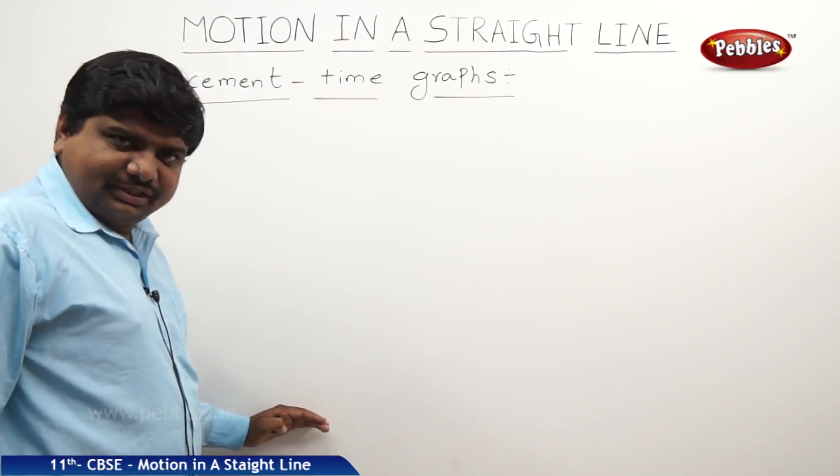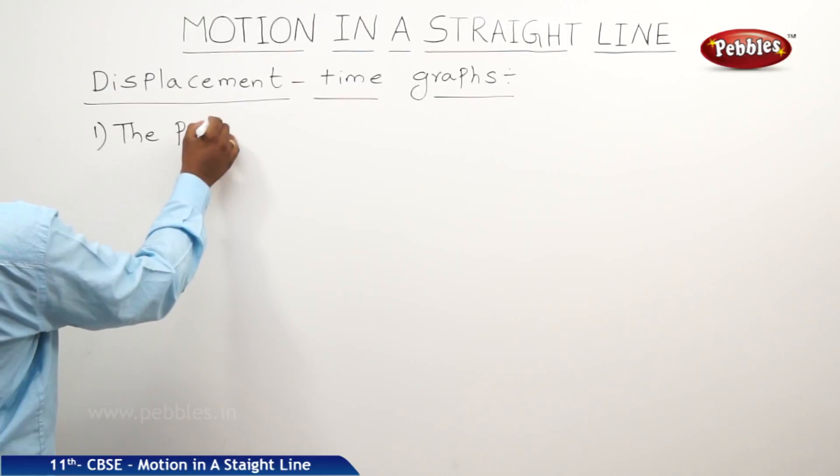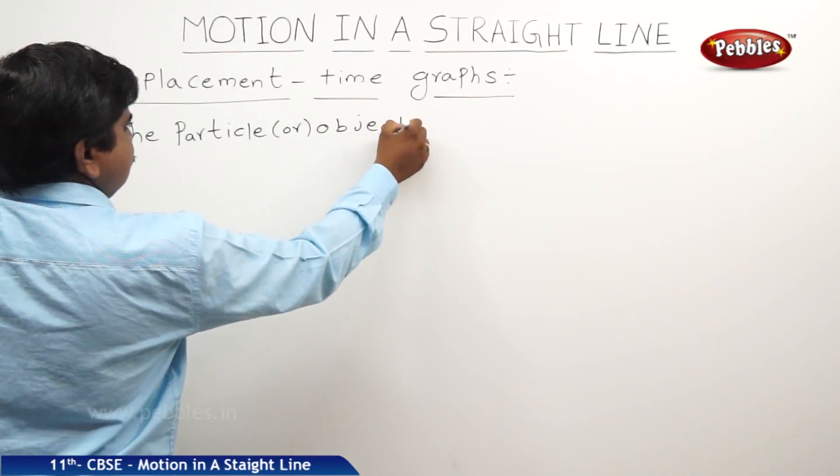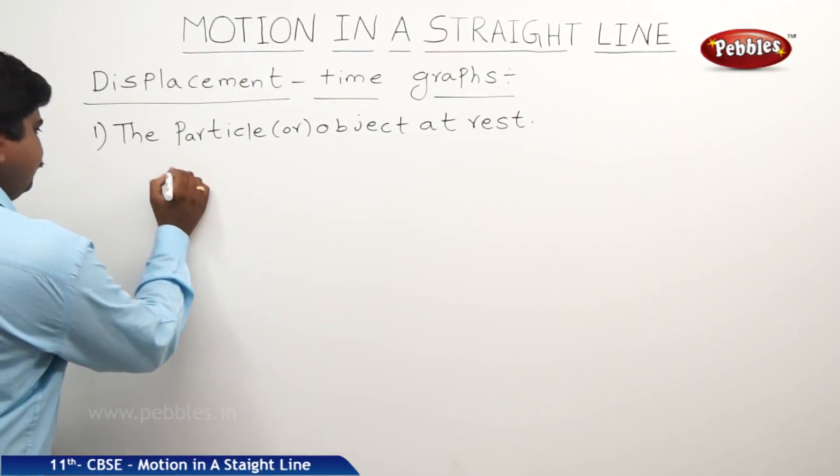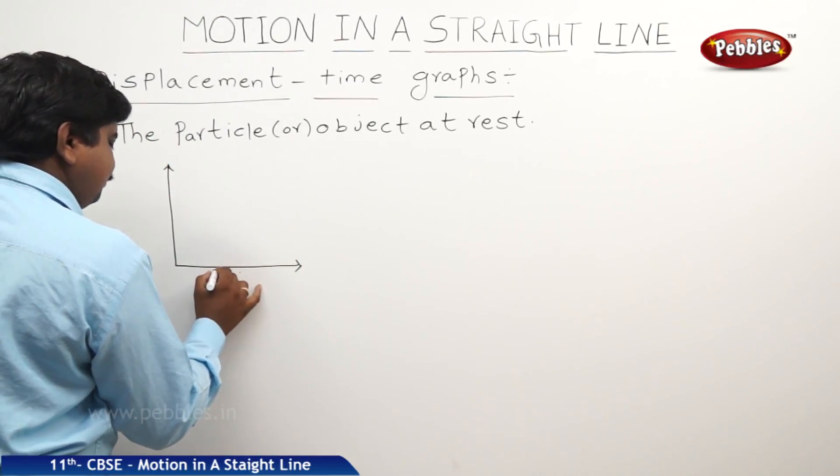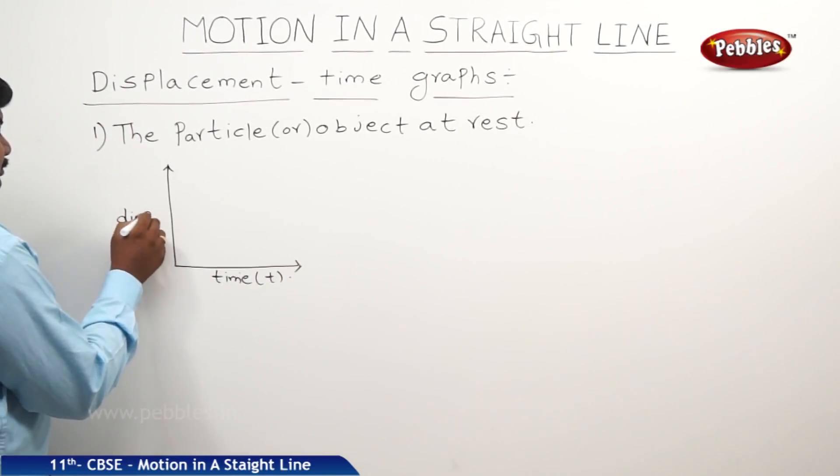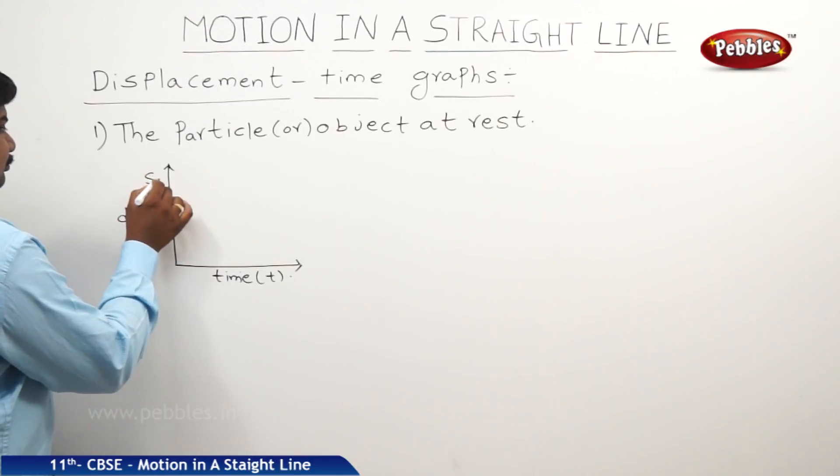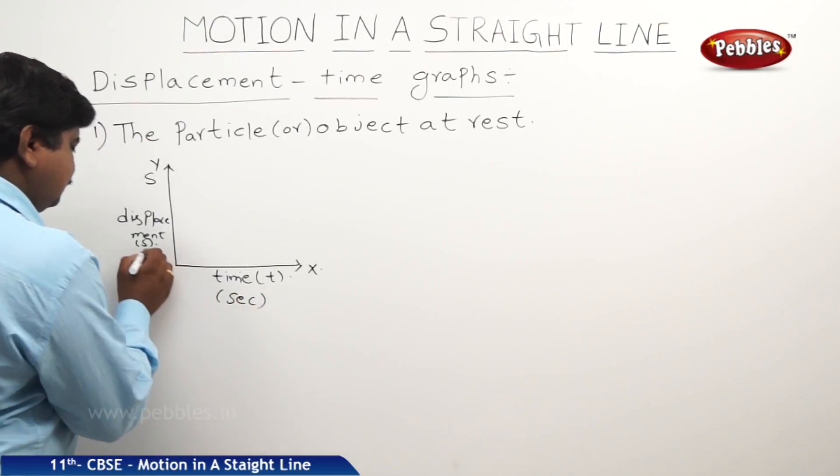In this graph there are some situations. The first situation is the object or the particle at rest. In this case, this is the model graph time t. This is displacement on y axis. This is on x axis. As we know this is seconds, this is in meters.